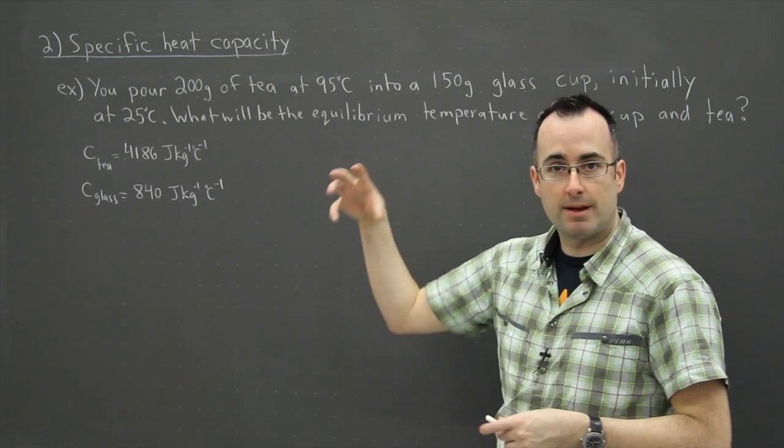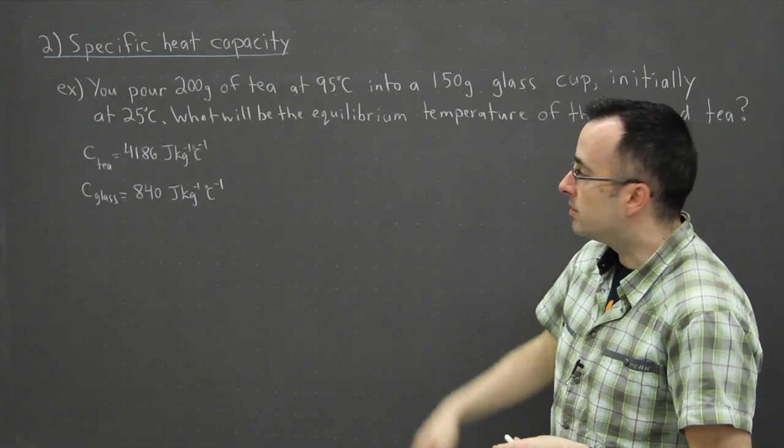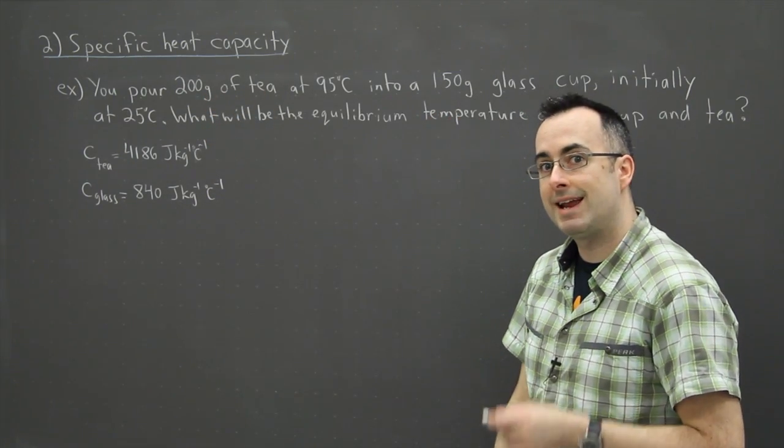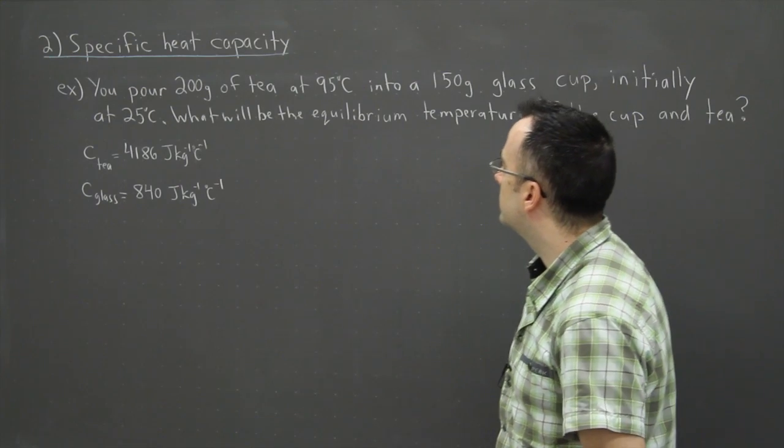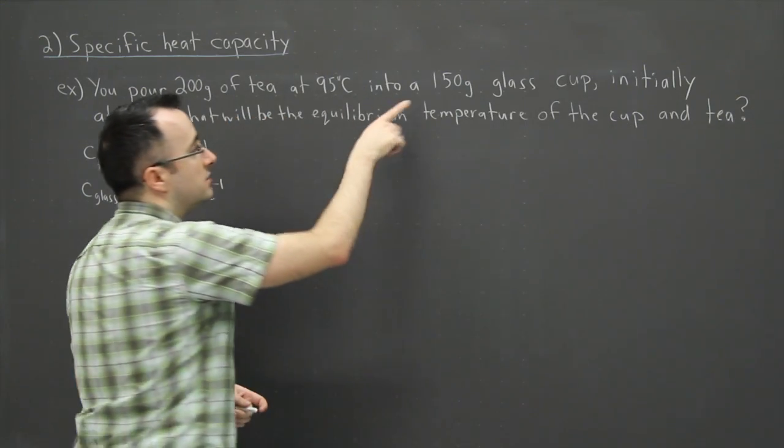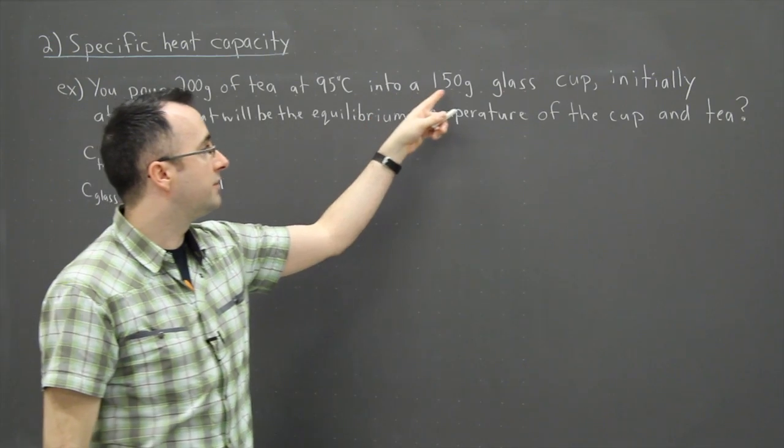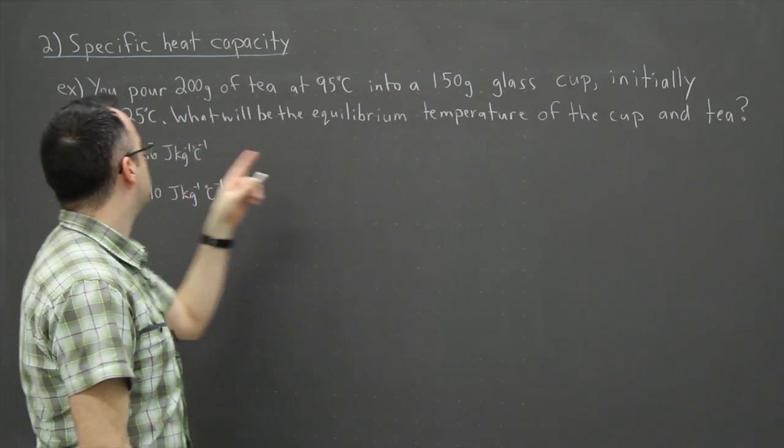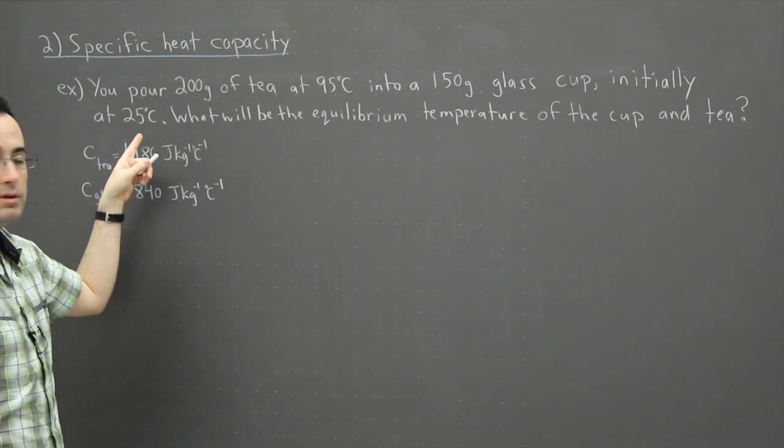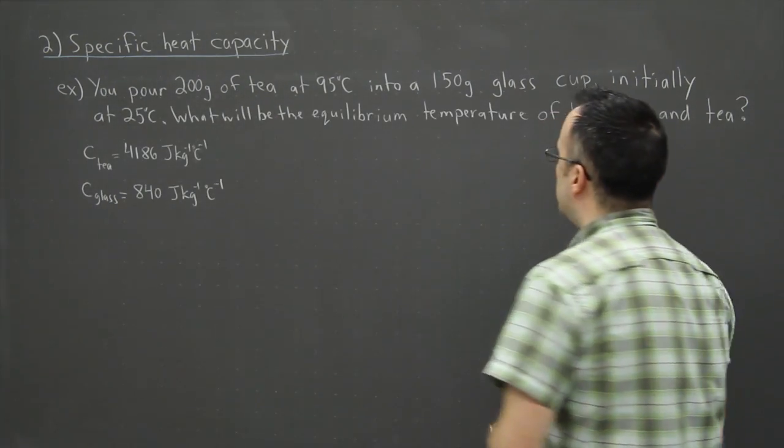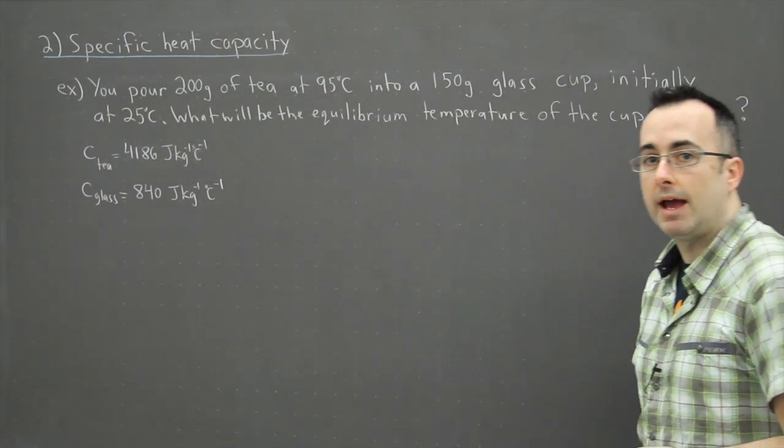This is an example where you're pouring something into something else. In this example you're pouring 200 grams of tea at 95 degrees Celsius into a glass cup that has a mass of 150 grams. That glass cup is initially at 25 degrees Celsius.